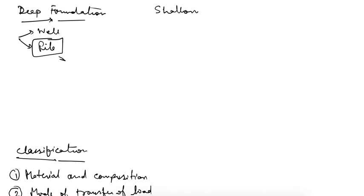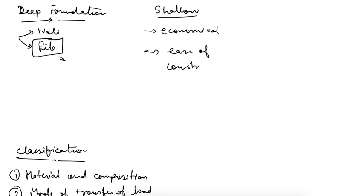Our first choice of foundation is always a shallow foundation because it is economical and it is easy in construction. We can simply excavate a very little amount of soil and construct our shallow foundation. But then when do we have to go for pile foundation? Obviously when the bearing capacity of the soil is not sufficient, then we have no other choice but to go for pile foundation.